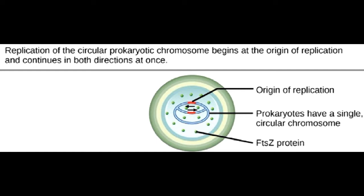The packing proteins of bacteria are, however, related to the cohesin and condensin proteins involved in the chromosome compaction of eukaryotes.